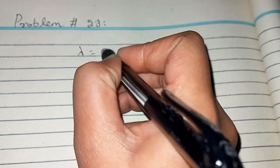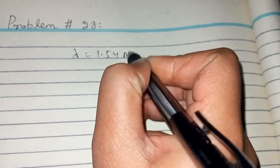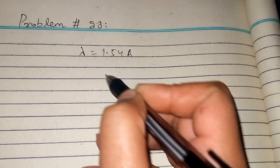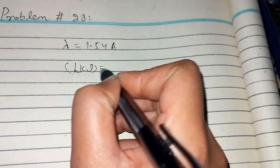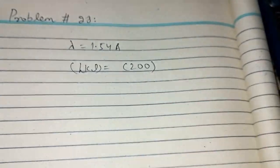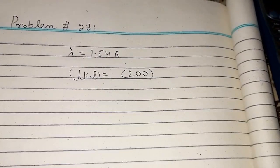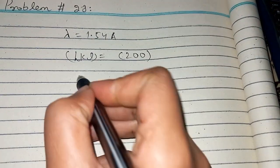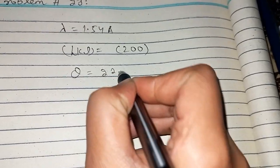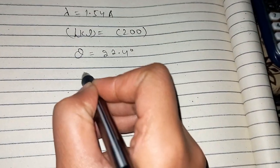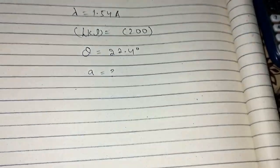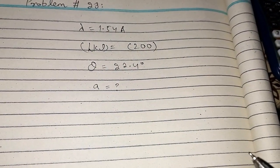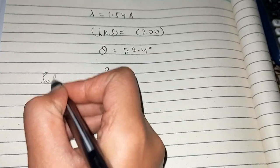Here is the given data: lambda which is 1.54 Angstrom, the plane given in hkl form, and the Bragg angle theta equals 22.4 degrees. We have to find out the side of the unit cell, the lattice parameter a. So let's move to the solution.